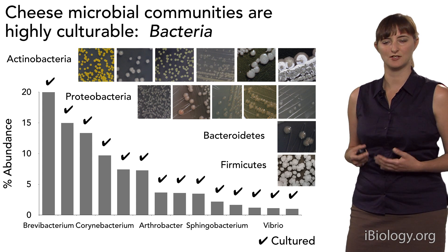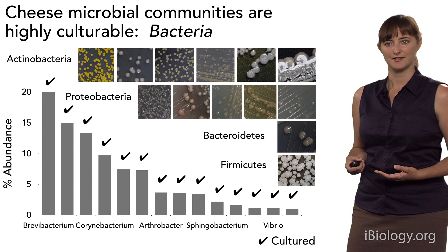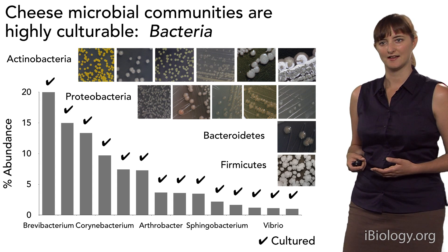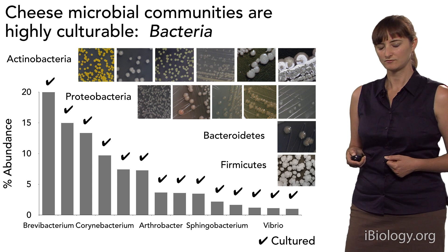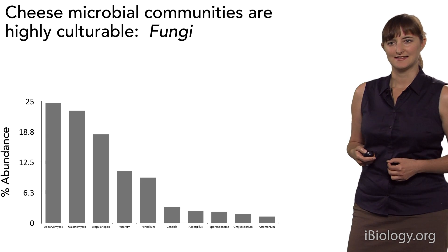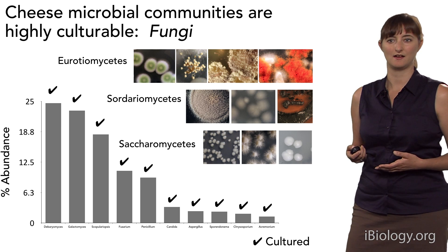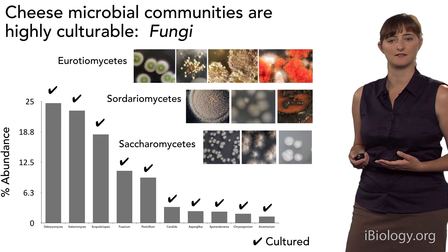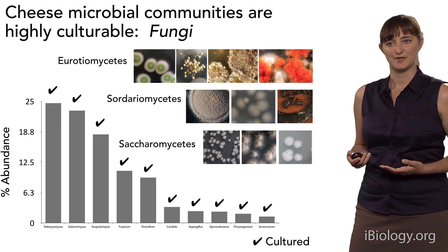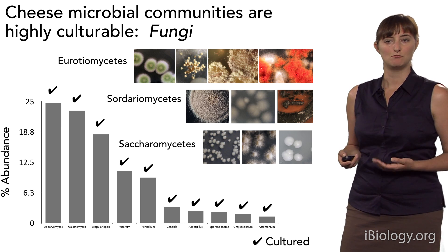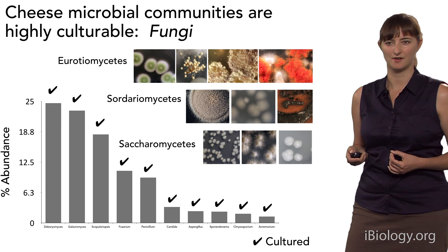From our sequencing, we looked at the most abundant bacteria across all the cheeses and actively went after each of these organisms to culture them in the lab. It turns out we're able to culture representatives of every single one of these bacterial groups, giving us a wonderful culture collection of different bacteria: different actinobacteria, proteobacteria, bacteroides, and firmicutes. For the fungi, we did the same thing and are able to culture representatives of every single one of the major genera we found in our cheese — a mixture of phylogenetically diverse molds and yeasts.